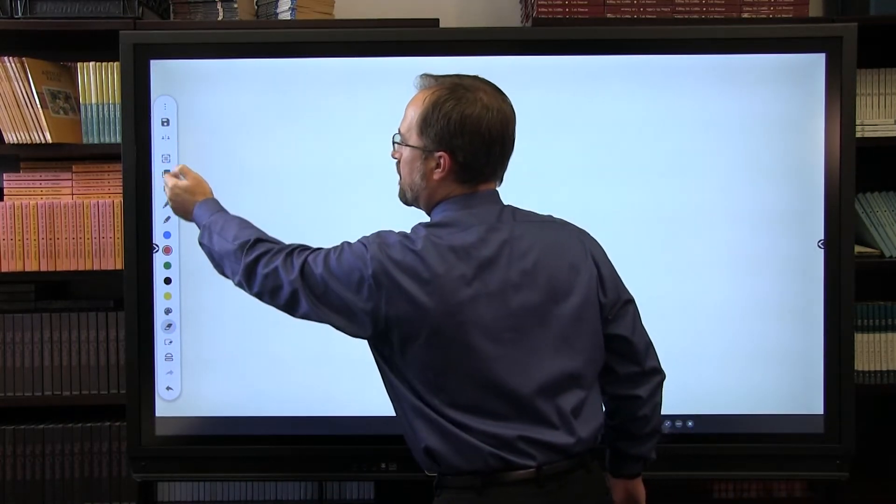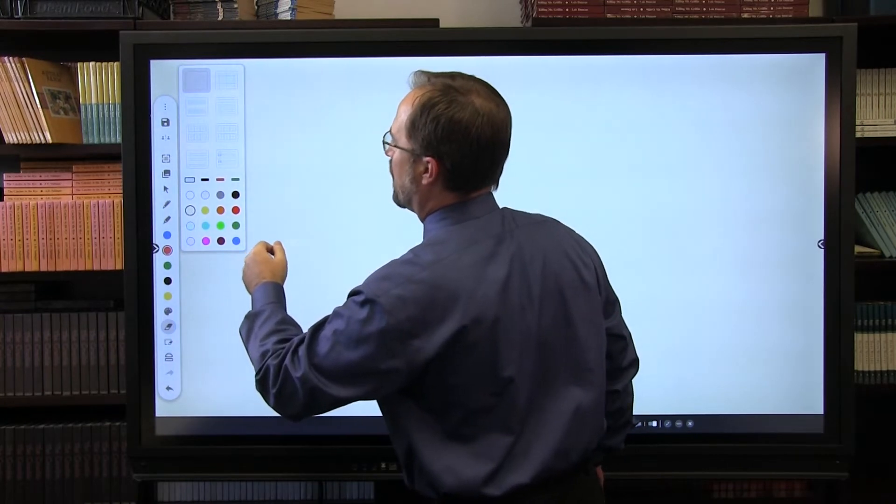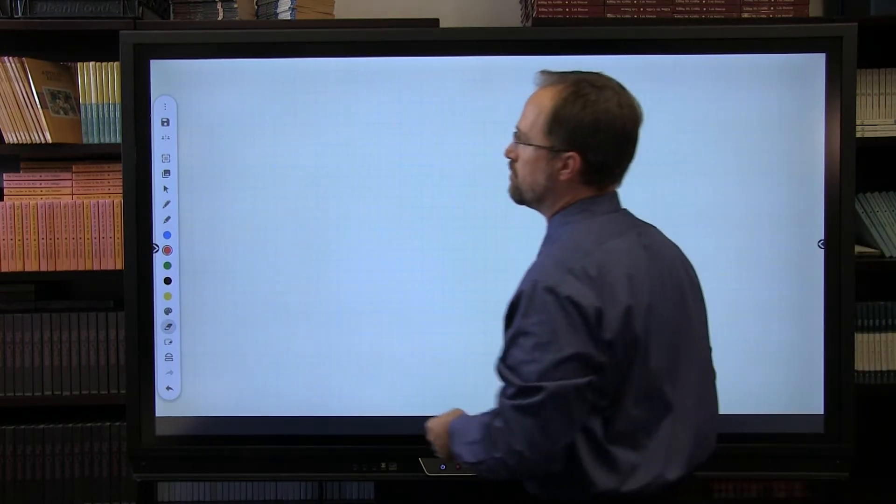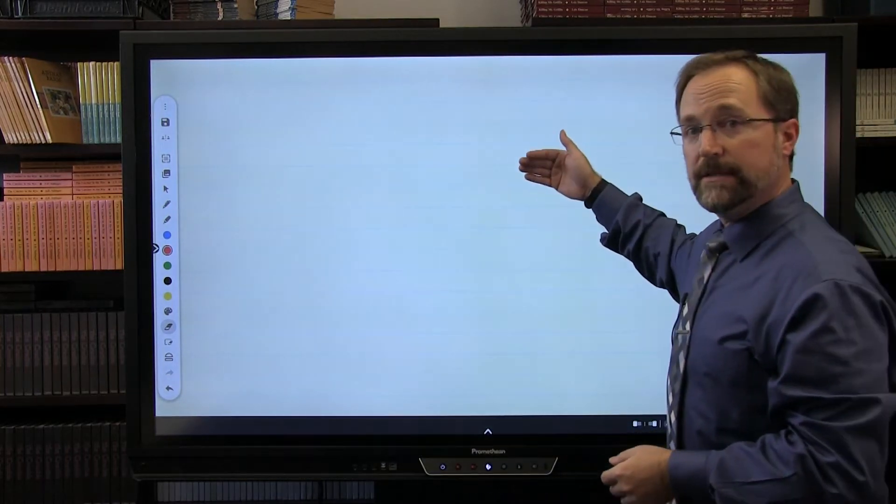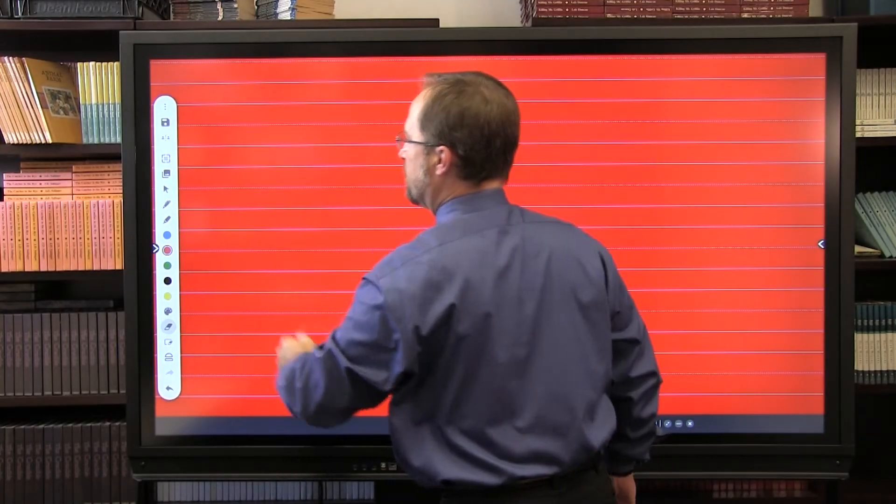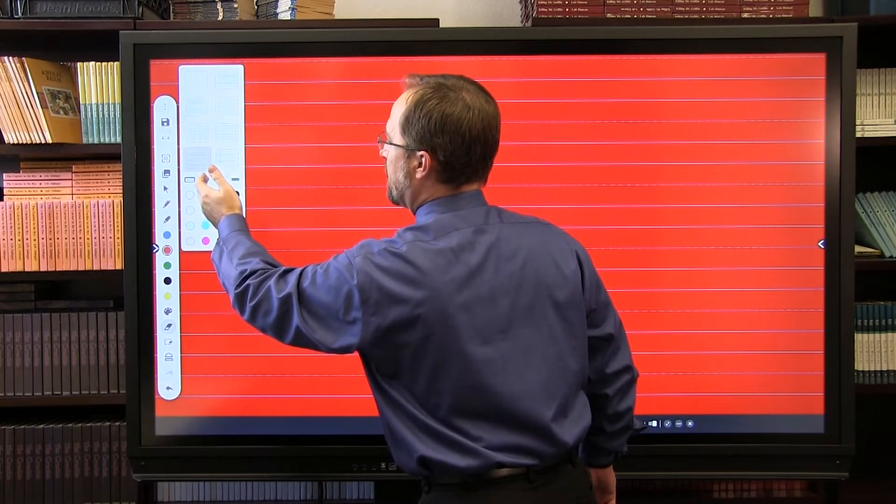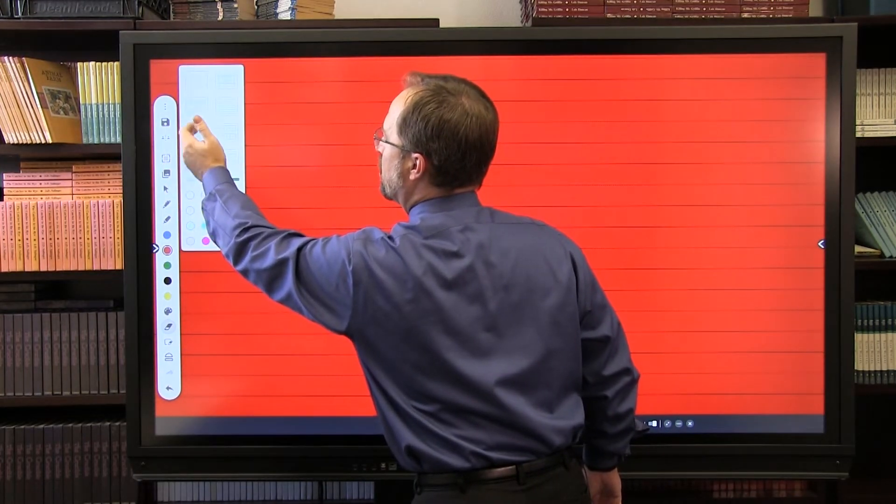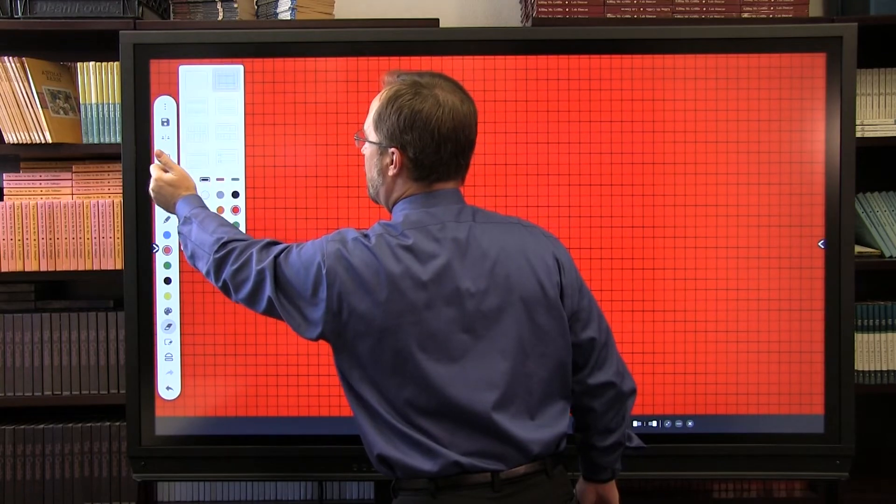You also have some other fun features in here, such as this little hashtag button. For those of you that might teach math or writing skills, you do have the options of putting grids up on the board. Also for writing, where it will give you your solid lines and your dashed lines. And you can change the color of the background. And you can change the colors of the lines.